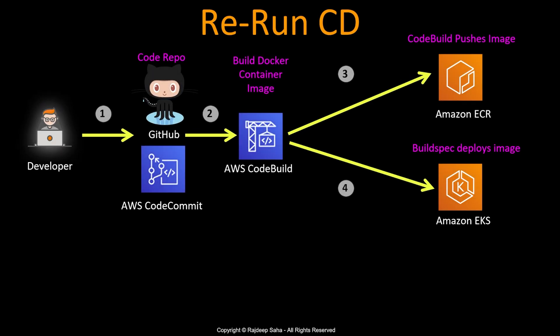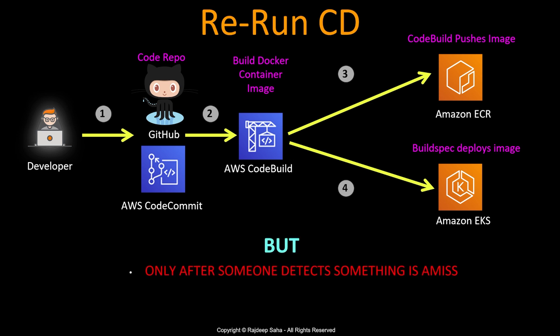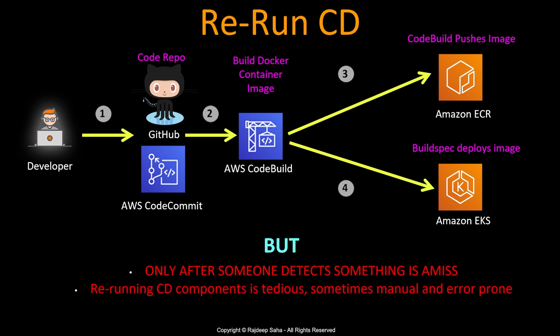You have to rerun the CD part to deploy the manifests again to the running cluster — but only if someone detects something is wrong. If someone changed the number of replicas, the container image, or even deleted Datadog, your application might not fail and it could be in that bad state where Datadog is not getting any data for quite some time before someone notices something is amiss. Also, rerunning CD components is tedious, sometimes manual and error-prone, and if something goes wrong during the CD it's really stressful to restart the DevOps pipeline.